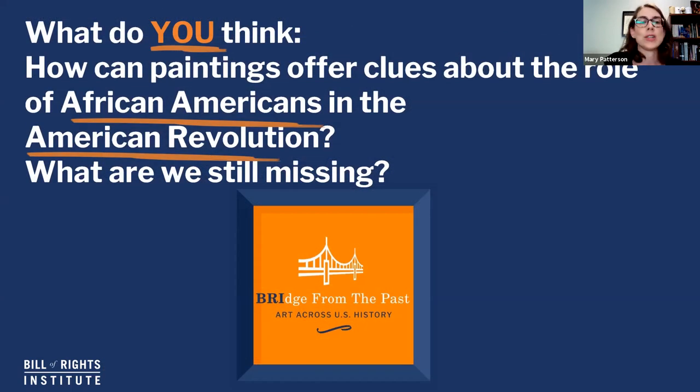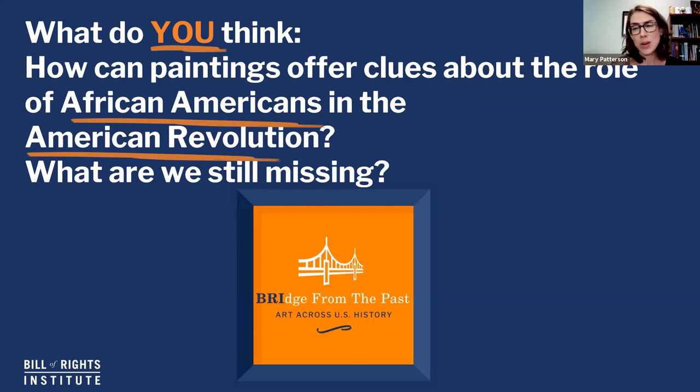I'm going to leave you with these questions: How can paintings offer clues about the roles of African Americans in the American Revolution? And what are we still missing? I talked very briefly about Prince Whipple and the Rhode Island Regiment, but that's just the tip of the iceberg when you think about all the complexity, nuance, and how African American men and women contributed to or pursued their own freedom during this conflict. That's all we have time for in today's episode. If you have questions, what do you still want to know? Be sure to leave us a comment, like and subscribe. We'll be back every other Thursday with more images and more ways to think about liberty and equality. Have we achieved these? What work do we still need to do? These are big questions, and the beauty of these images is that they can help us think about them. Until next time, take care.